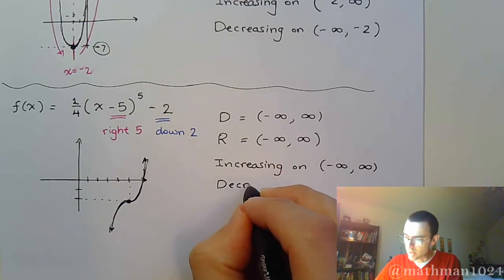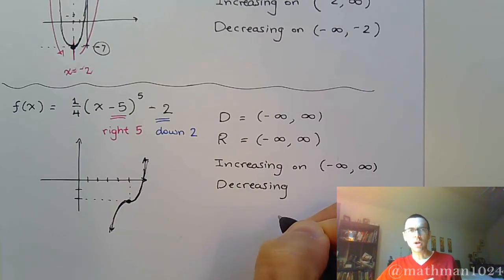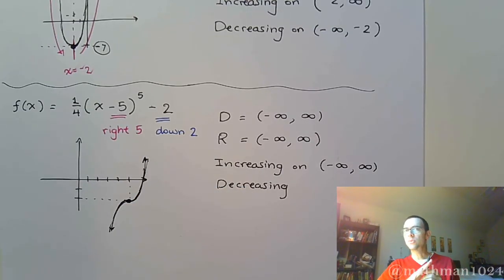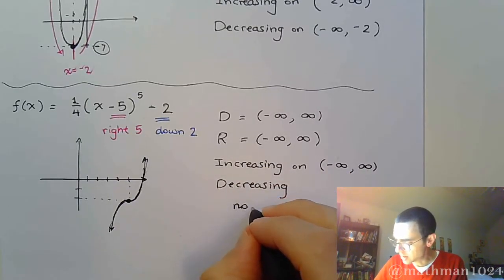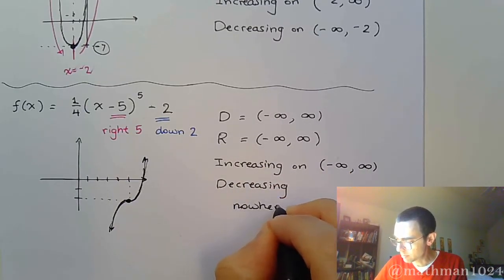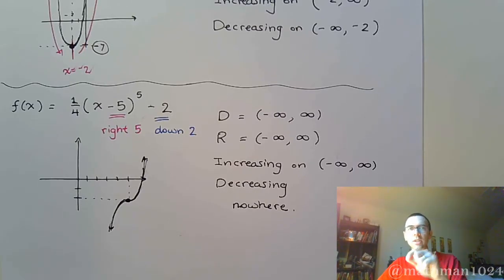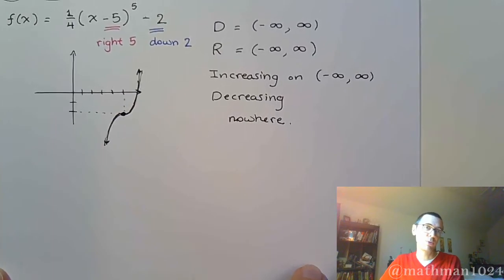And when it asks where it is decreasing — there's never a point where the function is going down from left to right. When you look at increasing and decreasing, it's always from the perspective of moving from left to right. This function is going up the entire way, so it's decreasing nowhere. If you're doing this in MyMath, it will have you type in interval notation or click to say it's not decreasing — you wouldn't ever type the word 'nowhere.' You just do that on a test.